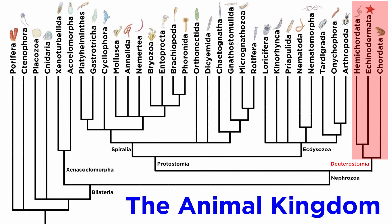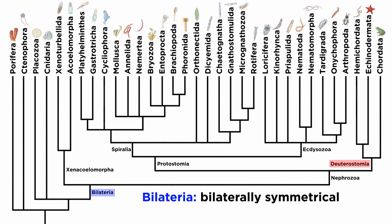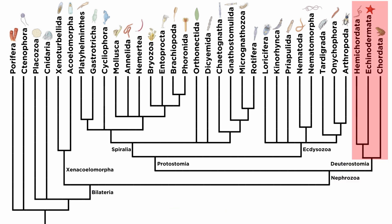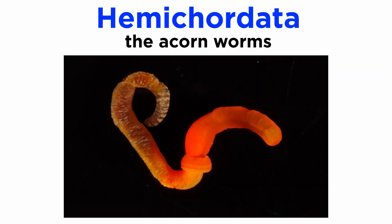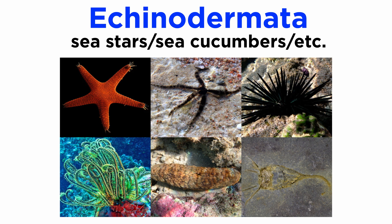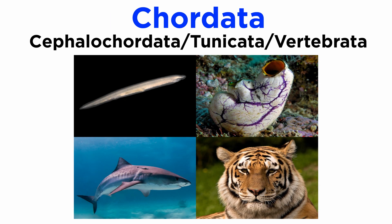But before we dive into any specifics, let's discuss some general information regarding Deuterostomes. All Deuterostomes are members of Bilateria and Nephrozoa, meaning they are all bilaterally symmetrical triploblasts. This clade contains just three phyla with varying body types: Hemichordata, the acorn worms; Echinodermata, which includes the sea stars, sea cucumbers, and others; and Chordata, which includes Cephalochordata, Tunicata, and Vertebrata.